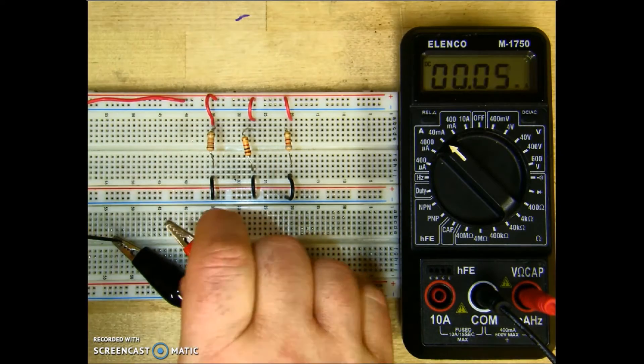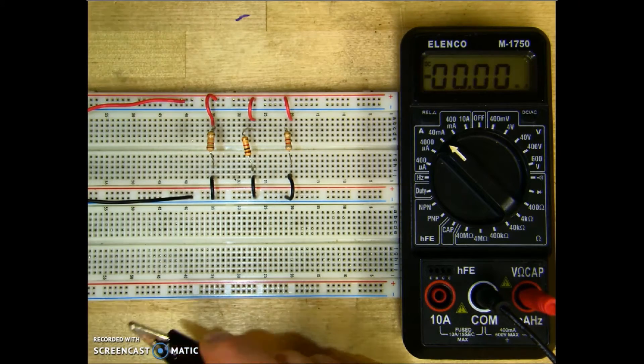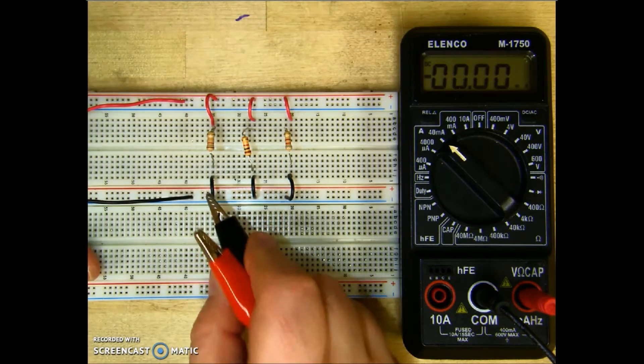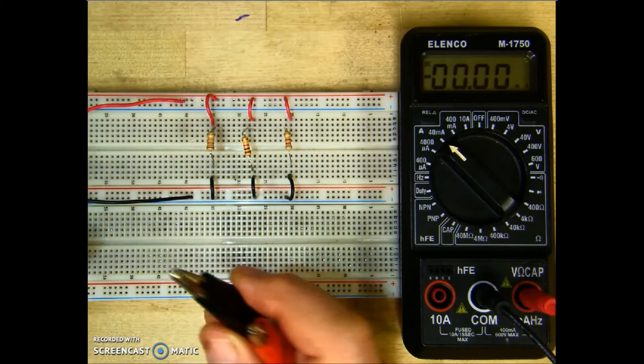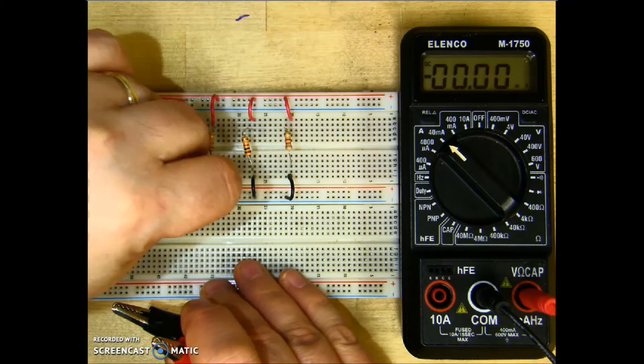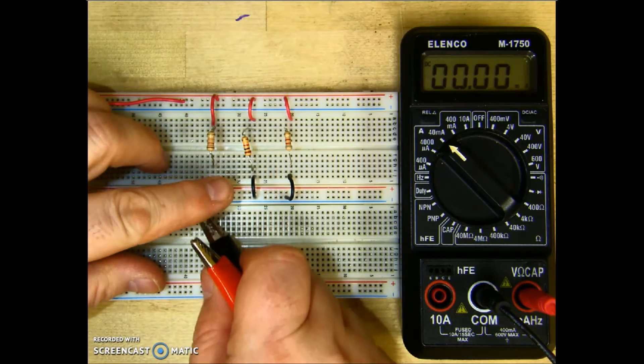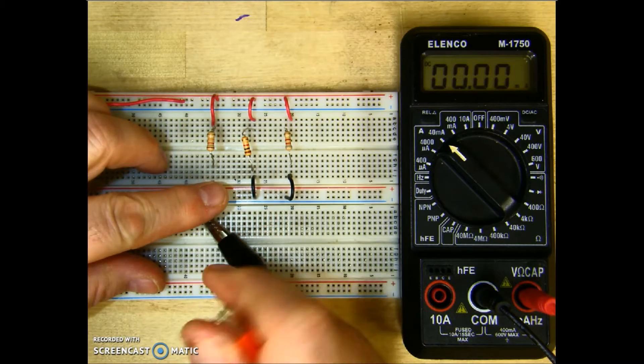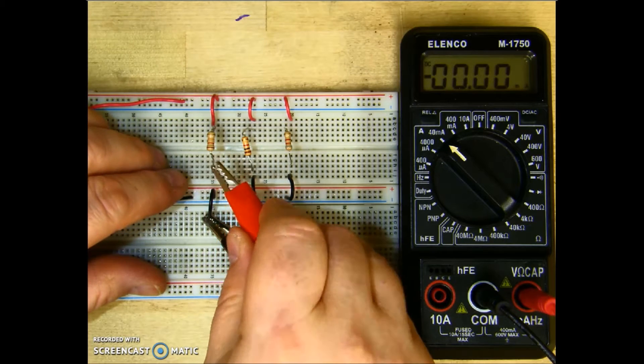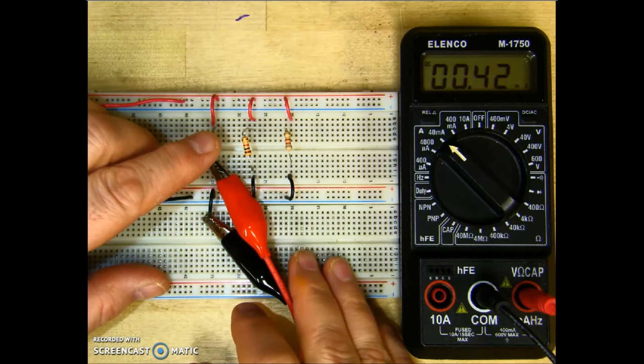Now what I want to do is go ahead and measure the individual resistors. So I'll put my source back in. Now one of the nice things about using jumpers is that it makes it easier to break the circuit. So let's go ahead and look at the current through R1. So what I'm going to do is pull the jumper out, connect up my negative lead, and then take my positive lead and plug it up to the bottom of R1.